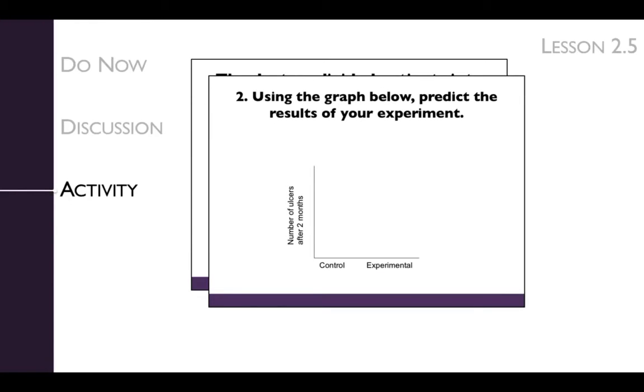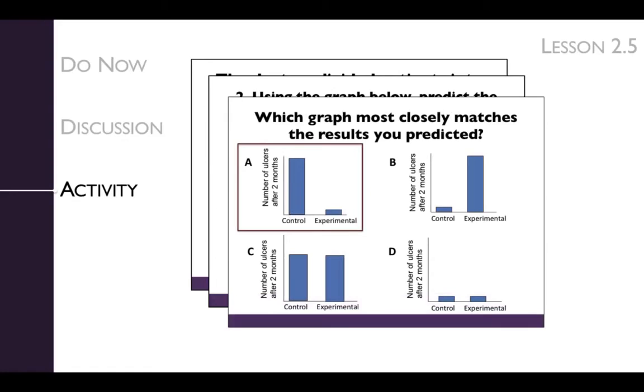Next, have the students work in their groups to predict the results they would expect if H. pylori caused ulcers. If there is time, have the groups draw their predictions on the board for comparison. After making predictions, have the students select the graph that resembles their prediction.